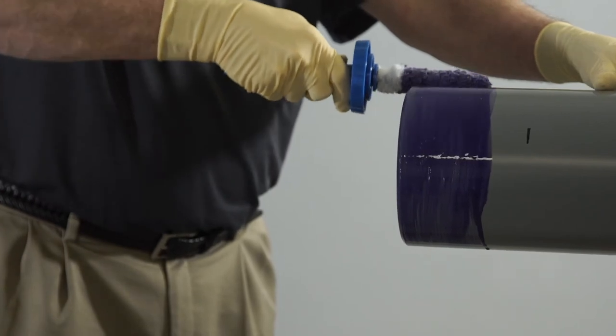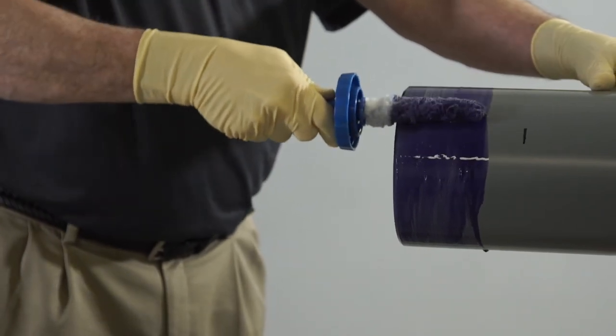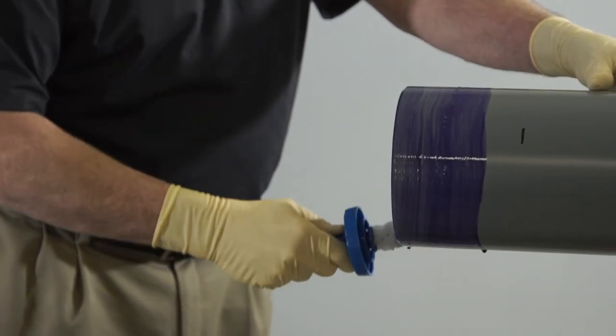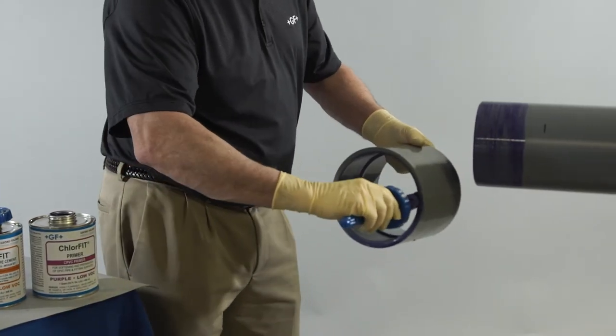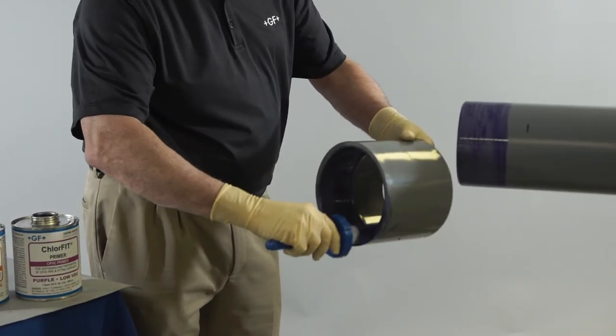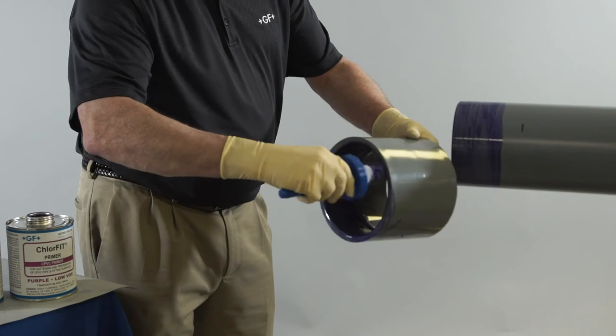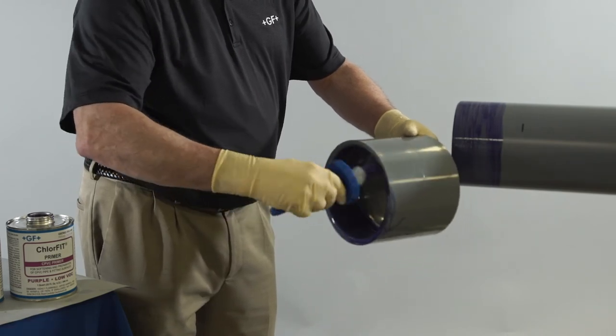Next, aggressively apply the primer to the end of the pipe to a point one half inch beyond the depth of the fitting socket. Apply another coat of primer to the socket. Do not allow the primer to run down the inside of the fitting or puddle at the bottom of the pipe.